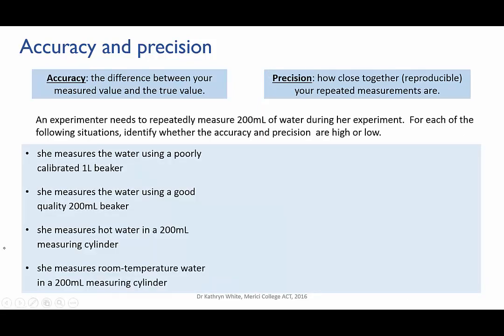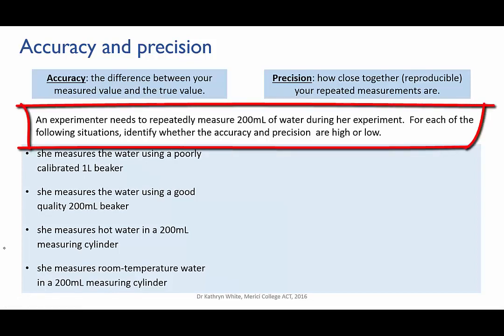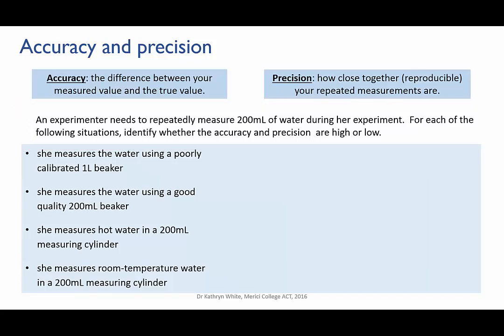So archery is all very well, but let's think about an actual experimental situation. Imagine an experimenter has to repeatedly measure out 200 mils of water during an experiment, and she needs to make sure that each sample is as close to 200 mils as she can get it. Pause the video and read the four scenarios here, and think about potential random and systematic errors for each one. Decide whether the accuracy will be high or low in each case, and whether the precision will be high or low.